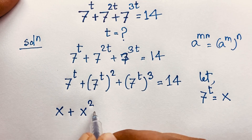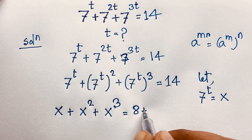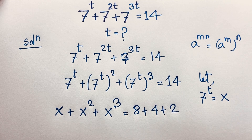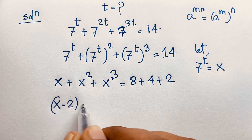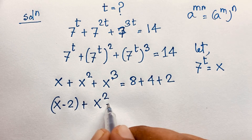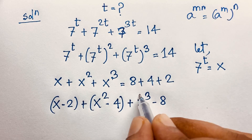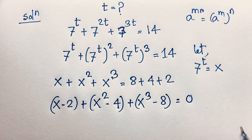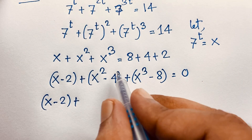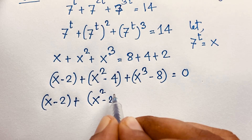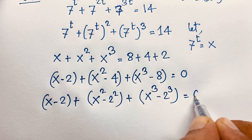You can see that 8 plus 4 plus 2 equals 14. Taking terms to the other side: x minus 2, times x squared minus 4, times x cubed minus 8 equals 0. I will apply both the a-squared minus b-squared and a-cube minus b-cube formulas.